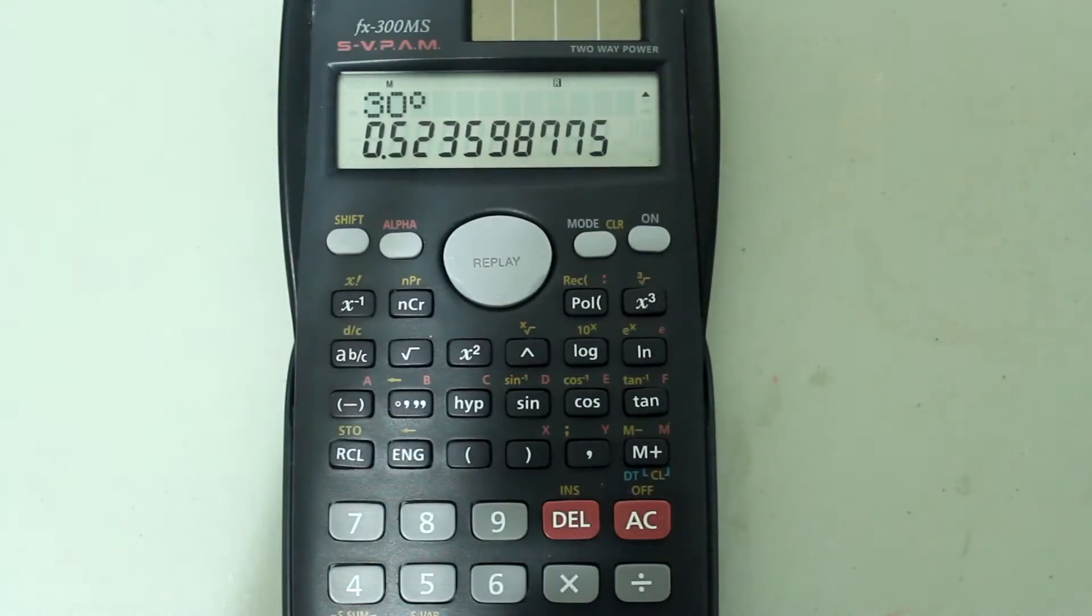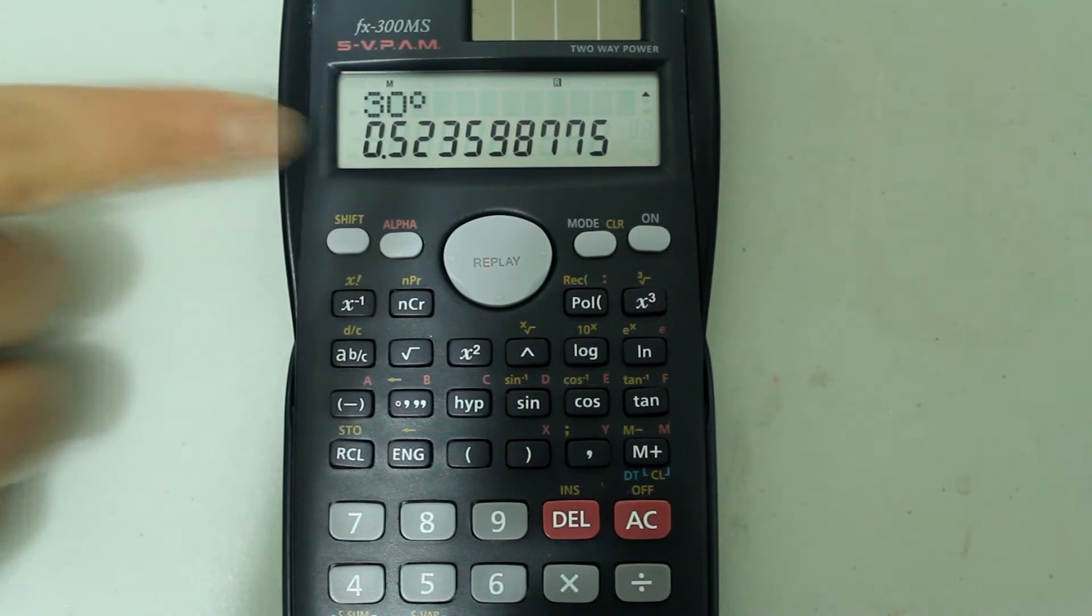And once we press the equals button, the answer will be converted to radians. And 30 degrees is pi over 6 radians, and you can check that pi over 6 gives you this decimal answer.